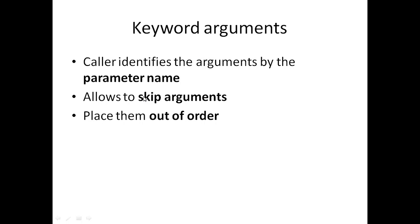The second type is keyword arguments. Here the caller identifies the arguments by the parameter name. The advantage is that we can skip some arguments or place them out of order. In the earlier case we had to place them in specified order — if first is name and second is age, that order must be maintained. With keyword arguments, we can place them in any order.